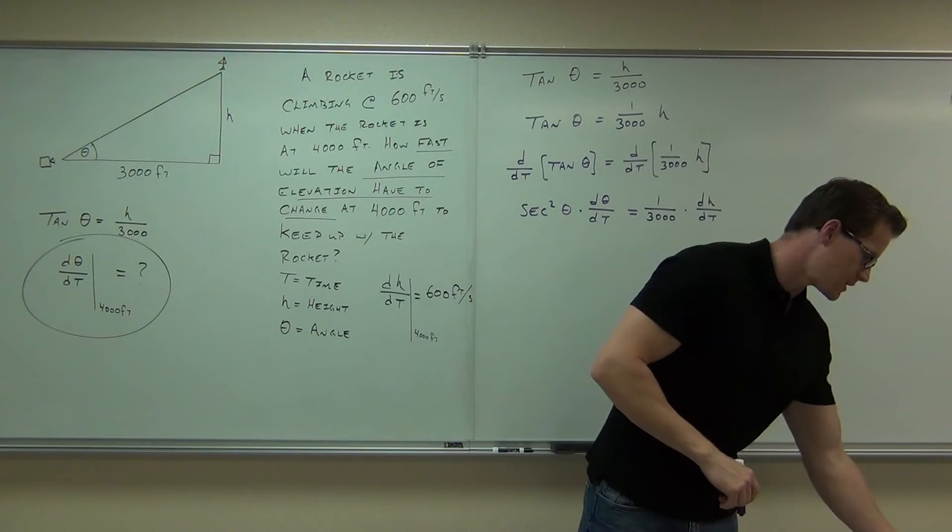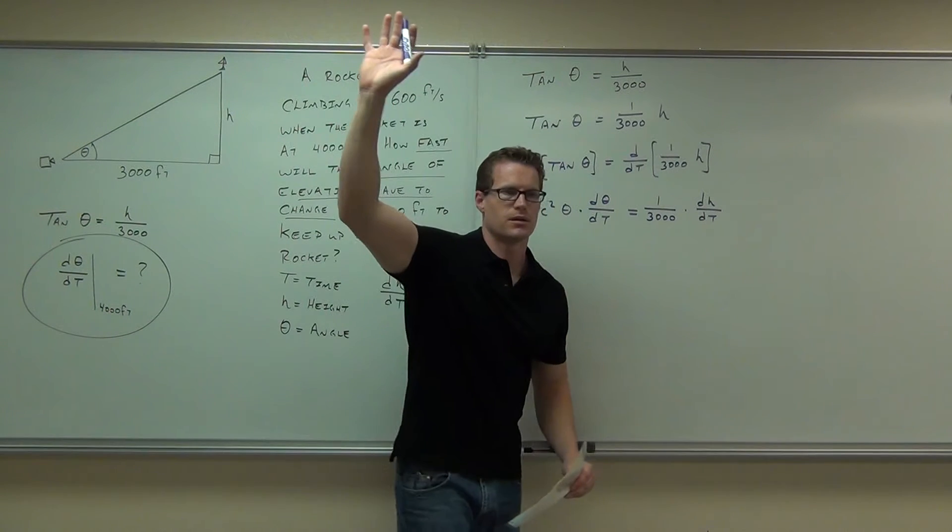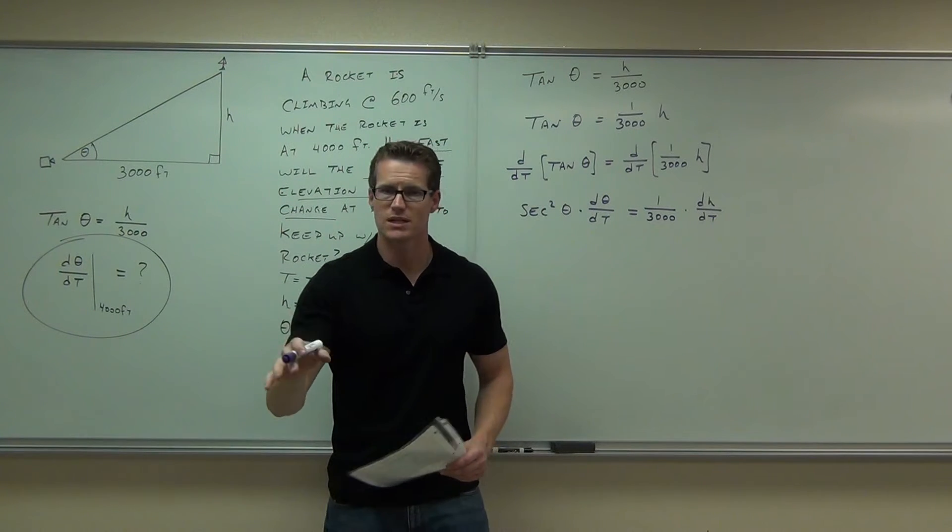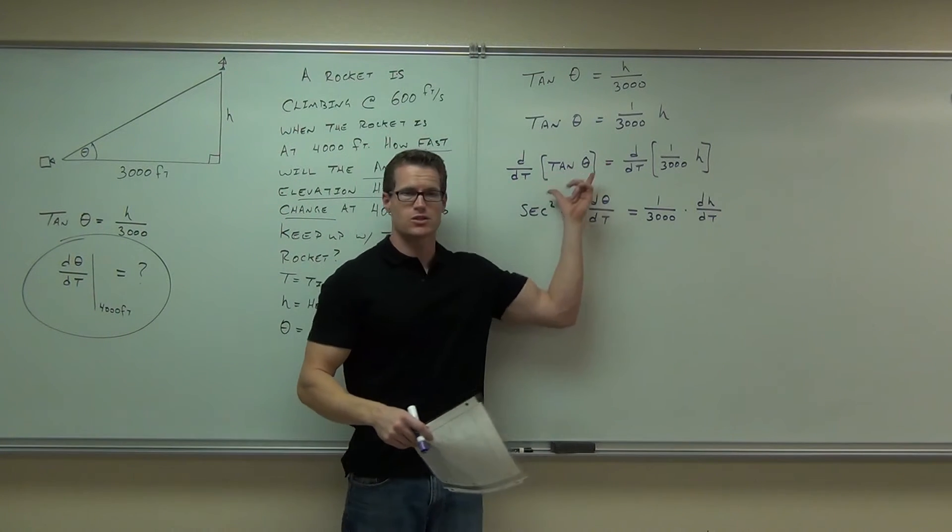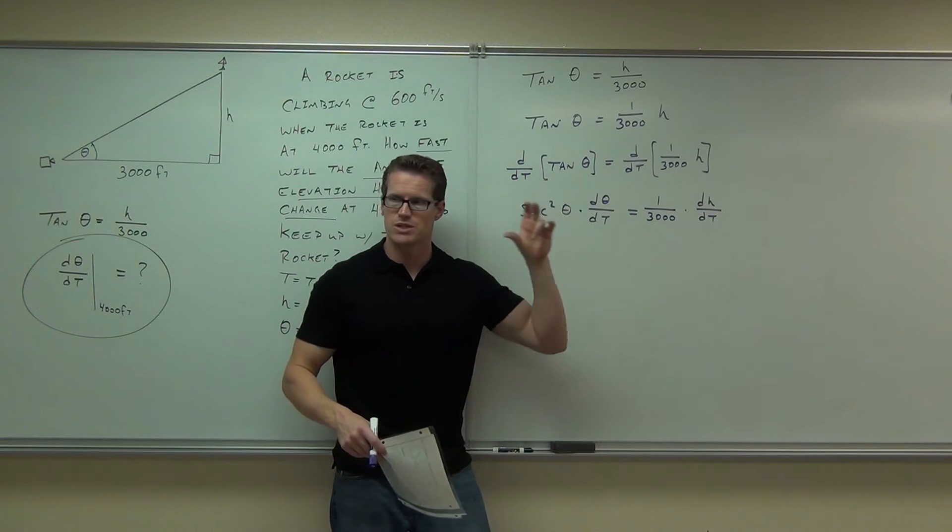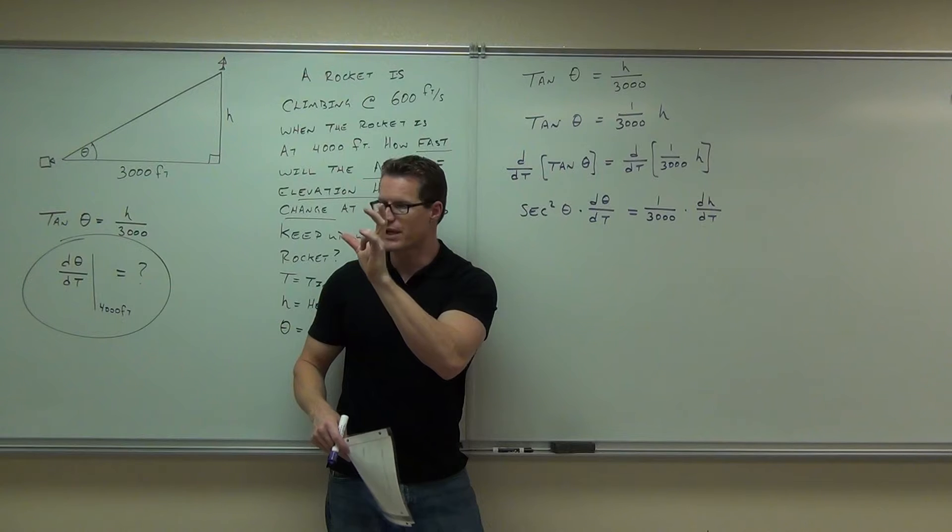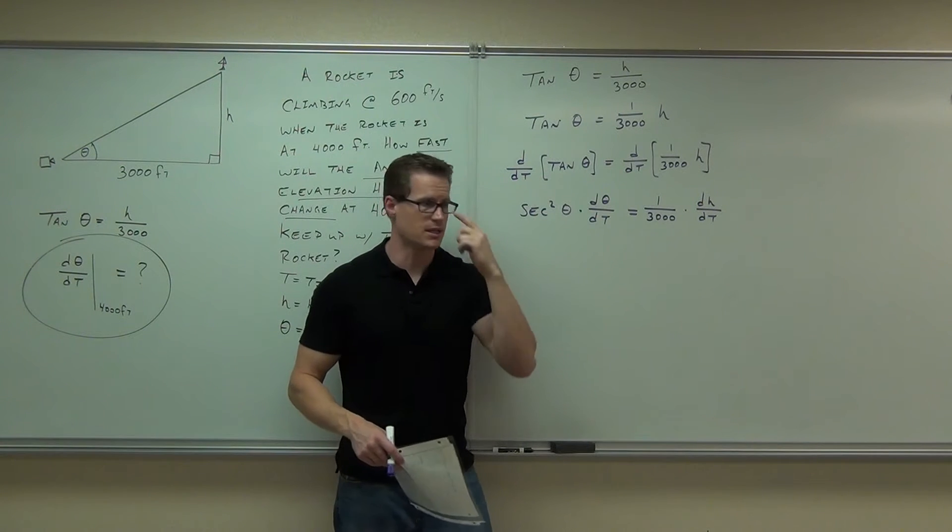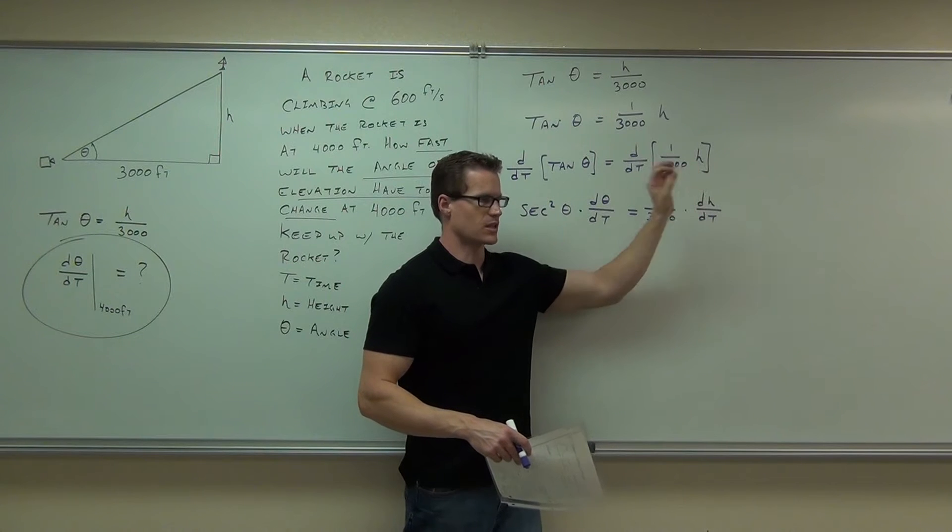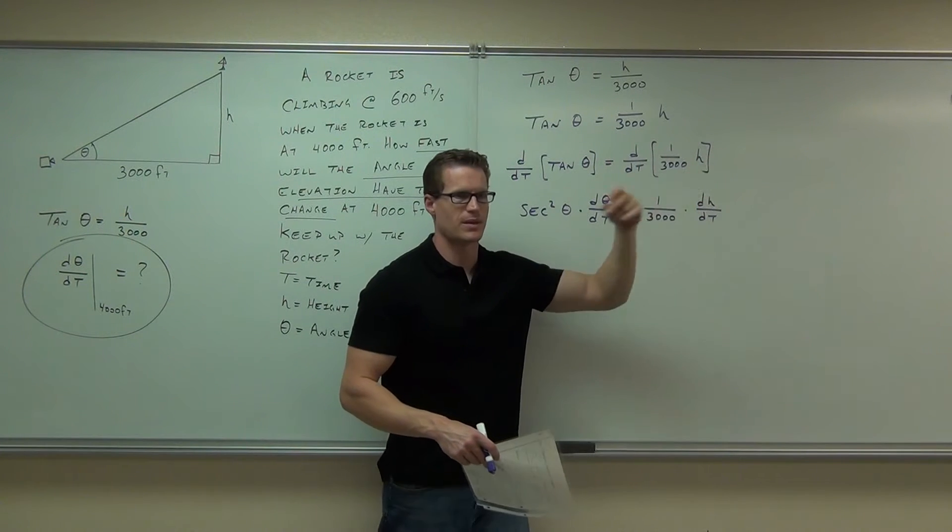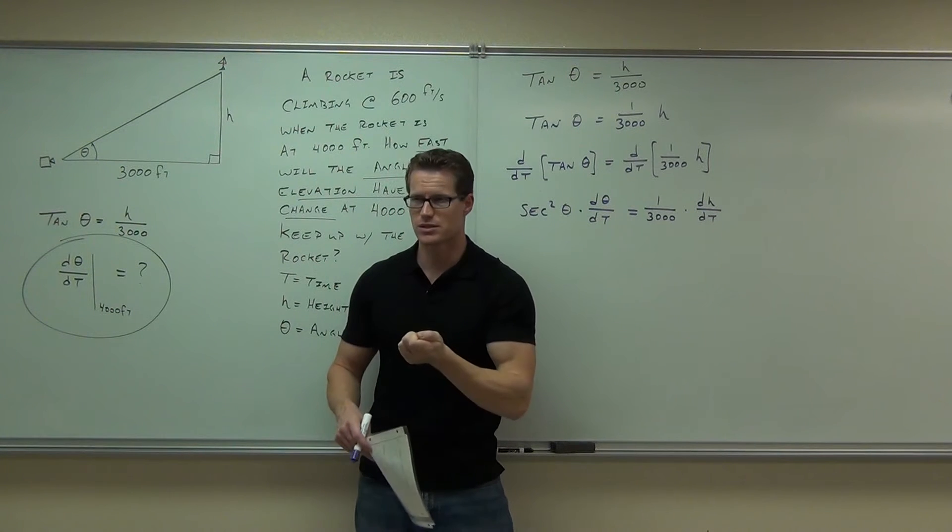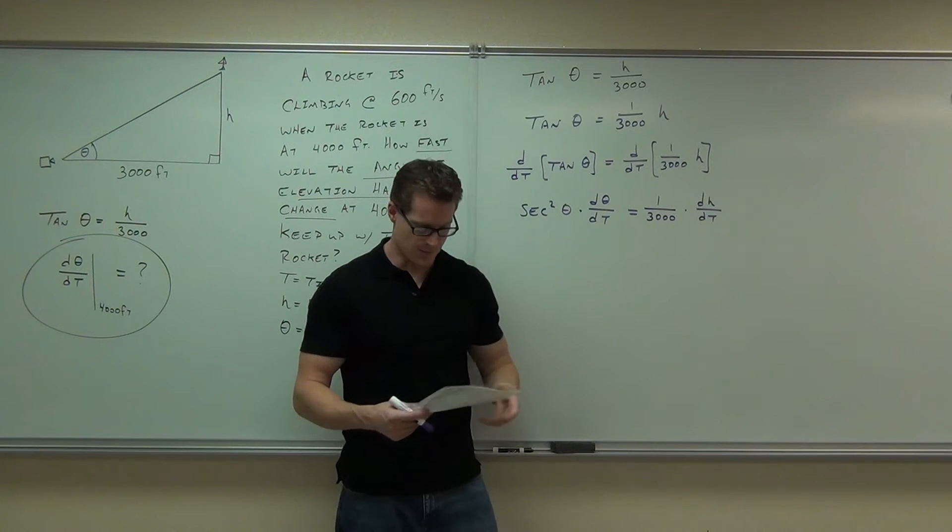By a show of hands, how many people got that? Good. If you didn't get that, are you okay on getting secant squared theta d theta dt? Every time you take a function of theta with respect to time, you've got to have a d theta dt. Are you okay on the one over three thousand? That h has an exponent of one, bring down the one, take one away from it, it becomes h to the zero, that's one. But you need a dh dt. That's a must.